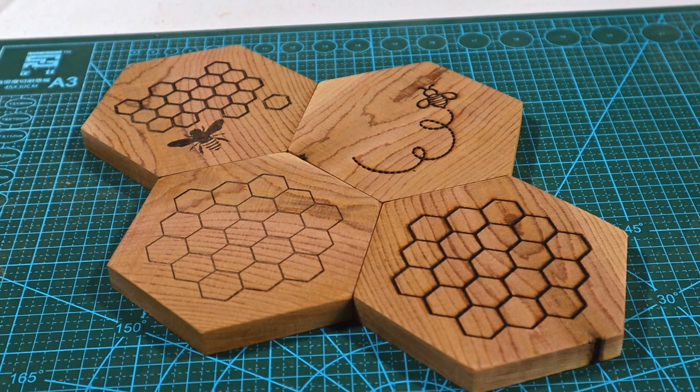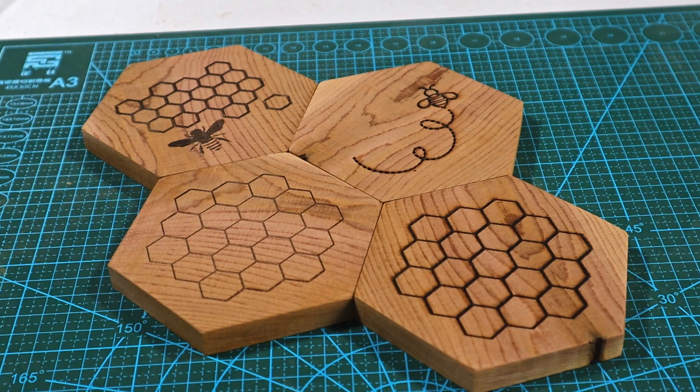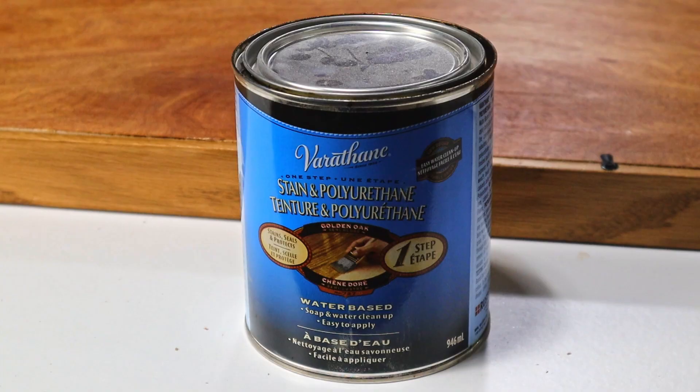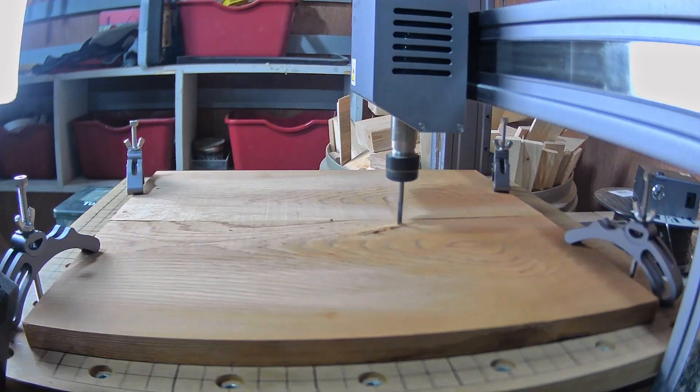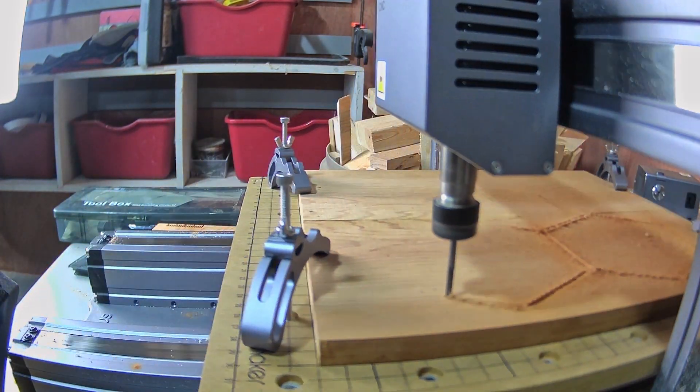After the laser etching I cleaned them up with a bit of sanding and then added this combination stain and varnish. I'm pretty happy with these and it didn't really take all that long. I think I'll cut out another set of these and use a different design on them.